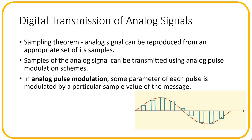Digital transmission of analog signals is possible by virtue of the sampling theorem, which tells us that an analog signal can be reproduced from an appropriate set of its samples. Hence we need to transmit only the sample values as they occur, rather than the analog signal itself. Samples of the analog signal can be transmitted using an analog pulse modulation scheme wherein the amplitude, width or position of a pulse waveform is varied in proportion to the values of the samples. The key distinction between analog pulse modulation and codeword modulation is that in codeword modulation, some parameter of the modulated wave varies continuously with the message.